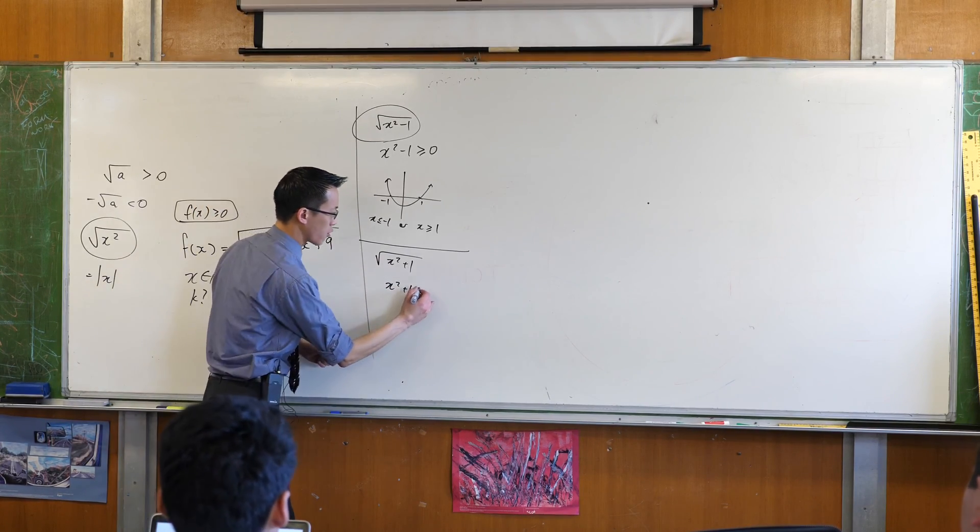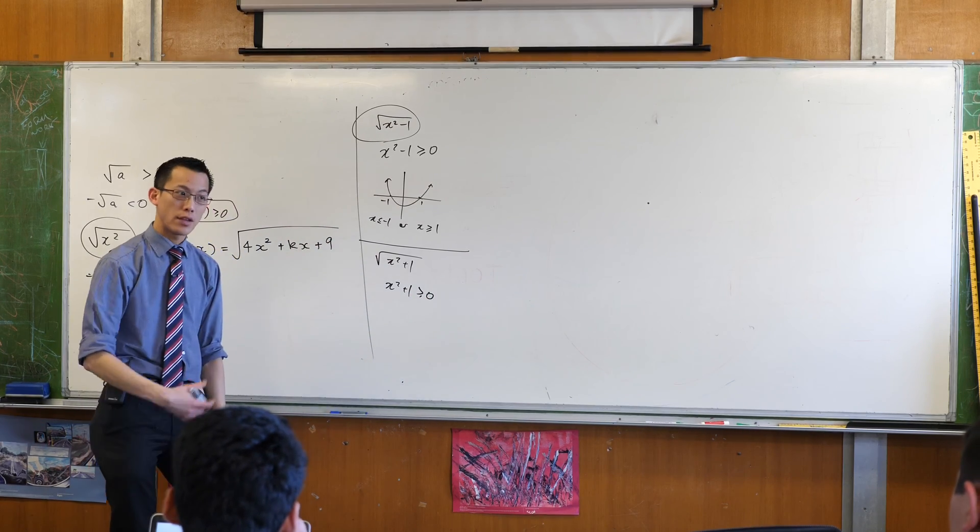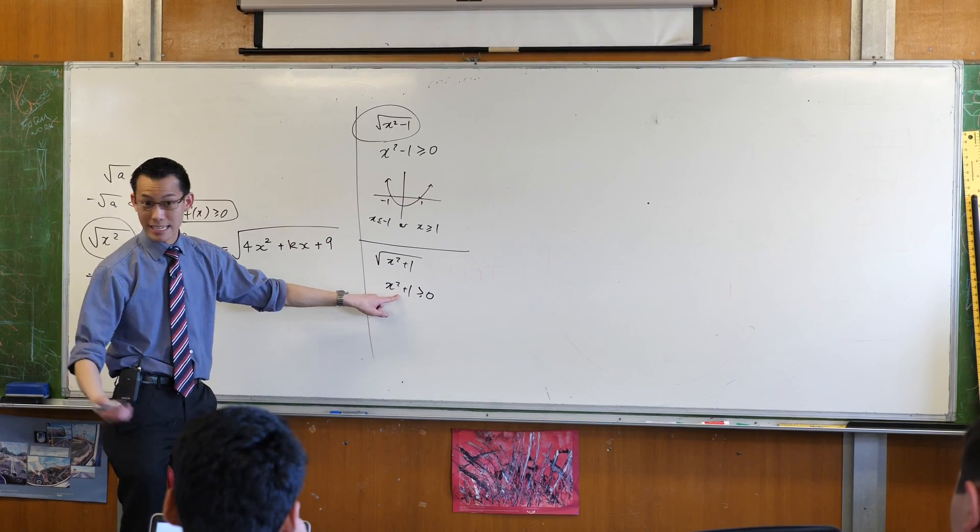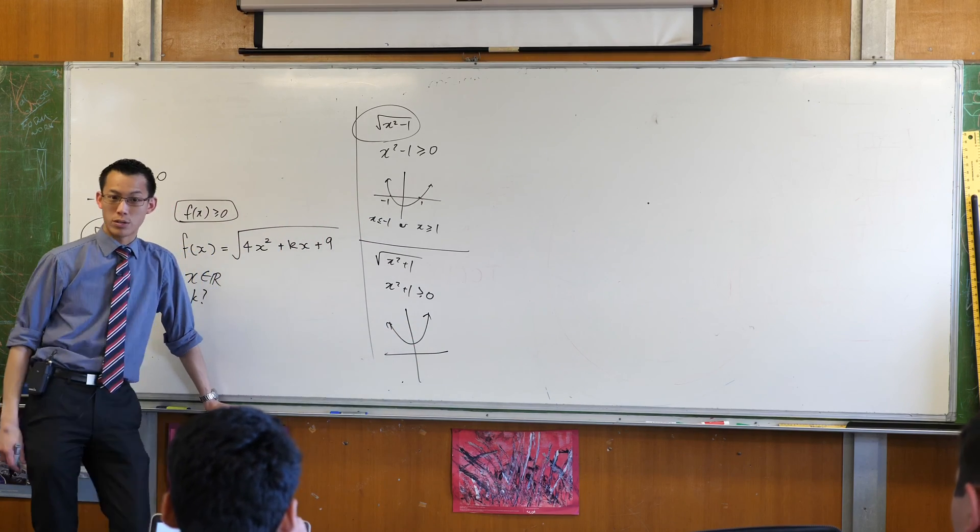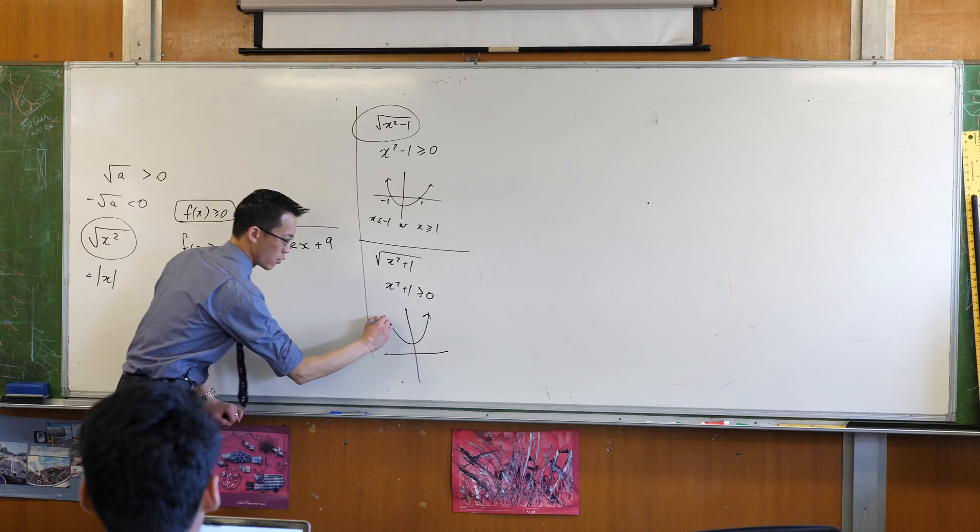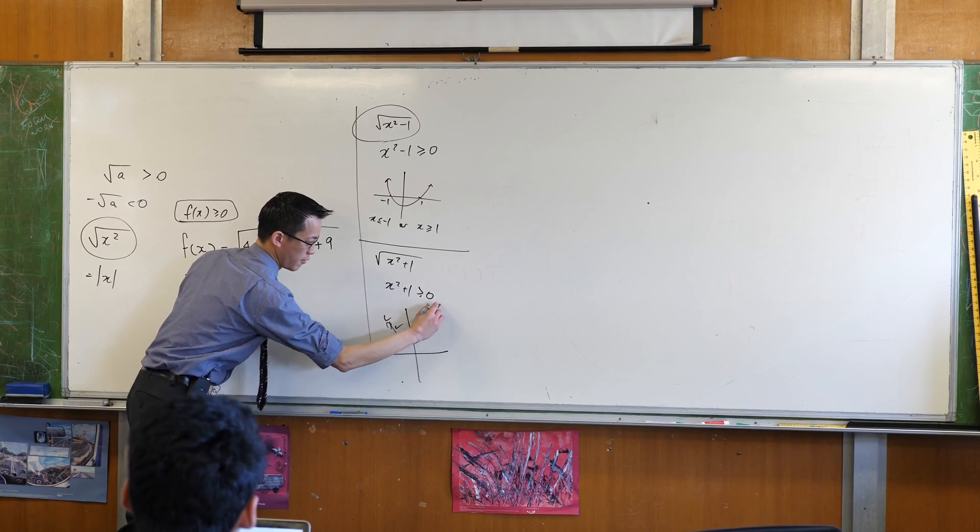When is this graph greater than or equal to zero? And if you think about, I deliberately chose this because it's an easy graph. When you think about the graph, it's always greater than or equal to zero. Every value of x, they're all fine. These guys are all fine.